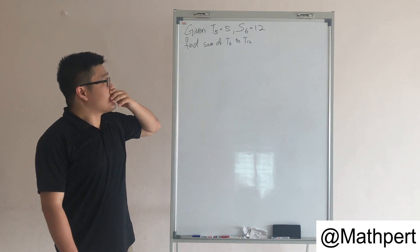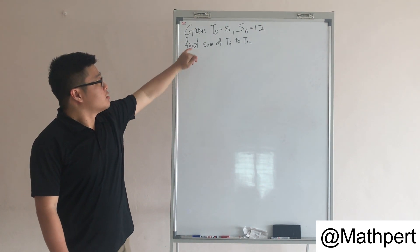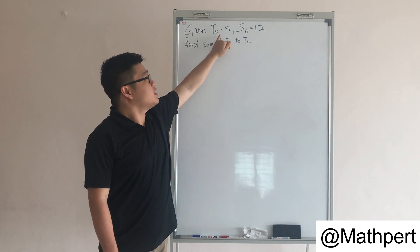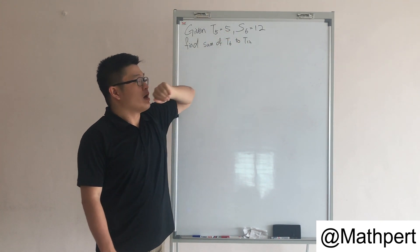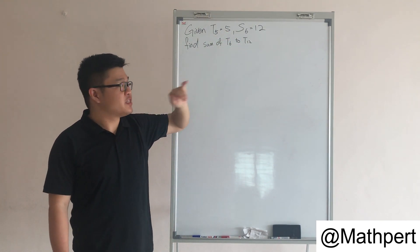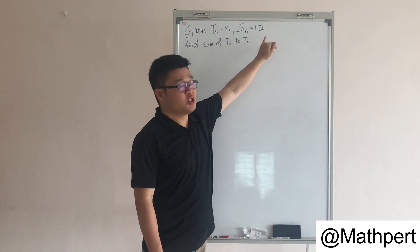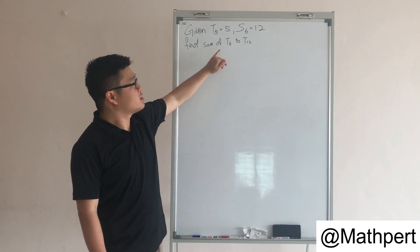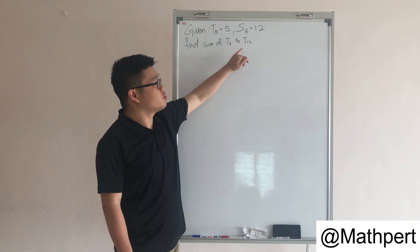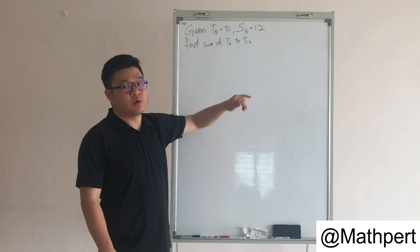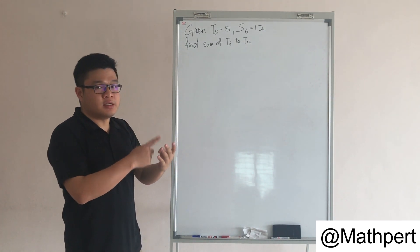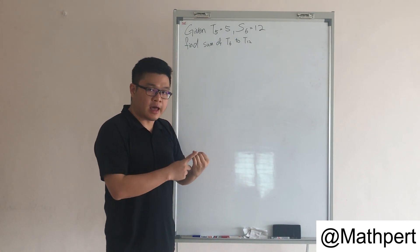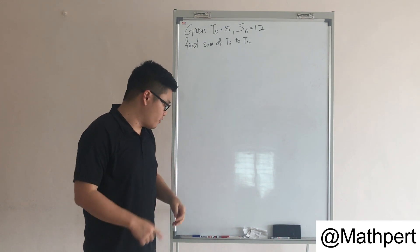Okay, given by the question: T5, the fifth term, is equal to 5, and the sum of the first 6 terms, S6, is equal to 12. We are asked to find the sum of T6 to T12, meaning we have to add up T6, T7, T8, T9, T10, T11, and T12.